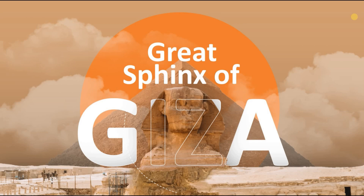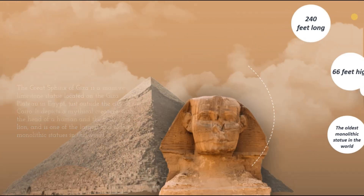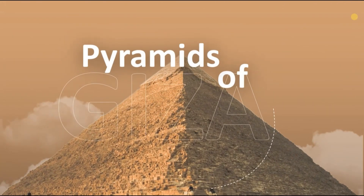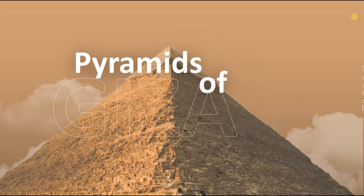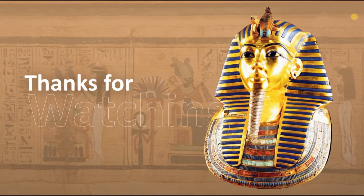The Great Sphinx on the Giza Plateau is one of the largest and oldest monolithic stone statues in the world. The pyramids of Giza are remarkable architectural symbols of ancient Egypt, built over 4,500 years ago and among the most famous structures in the world. Thank you for joining us on this brief journey through Egypt's rich history.